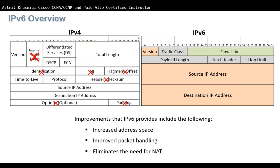There is a new field in IPv6 called Flow Label, which does not exist in IPv4. It provides special services for real-time applications by informing routers and switches not to reorder packets, keeping them on the same flow.